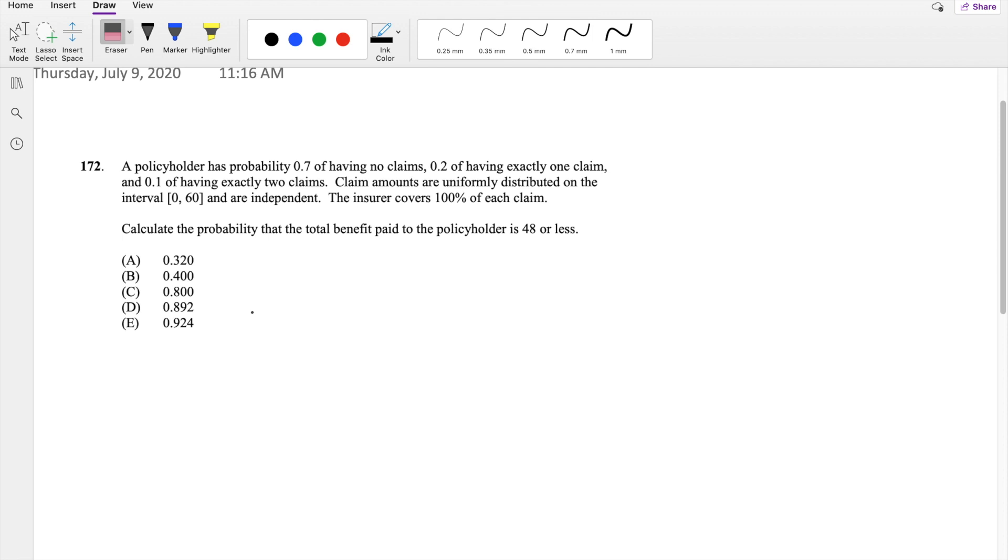So I'm going to denote x as the number of claims. So then the probability of x being equal to 0, having no claims, is 0.7. The probability that x is equal to 1 is equal to 0.2. And the probability that x is equal to 2 is 0.1. We know there's nothing more because all these probabilities already add up to 100%.